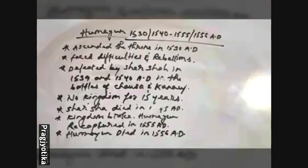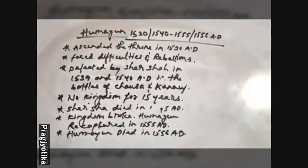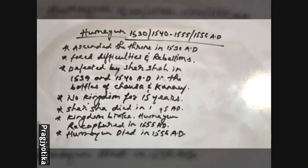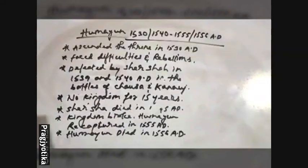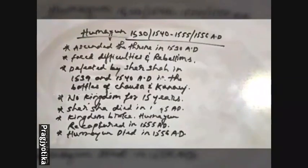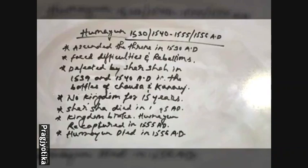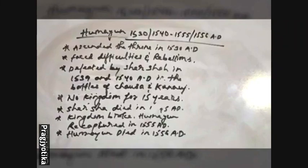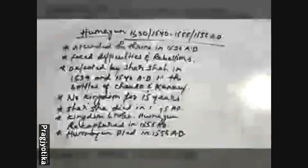After the death of Babur, his eldest son Humayun came and sat on the throne in the year 1530. His reign lasted from 1530 to 1540 and then again from 1555 to 1556 AD — we will discuss why there are two date ranges. When Humayun sat on the throne, he had to face a lot of trouble from different quarters. His own brothers were hostile to him, and apart from that, he had to face many rebellions in Malwa and Gujarat, and could not establish strong power.